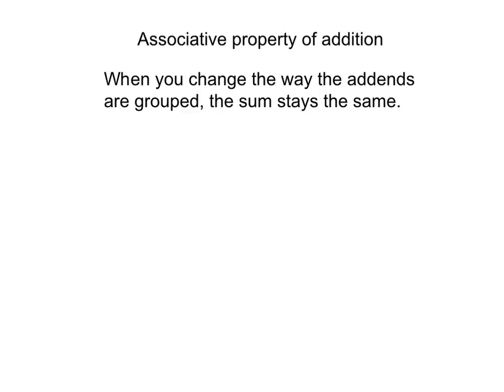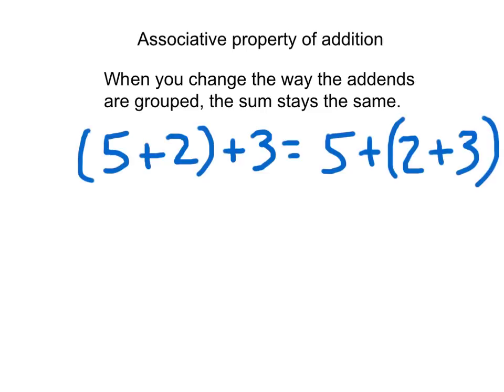Here's the definition — go ahead and copy it down. We've got the associative property of addition: when you change the way the addends are grouped, the sum stays the same. When you change the way the addends — the numbers we're adding together — are grouped, the sum, which is the answer to an addition problem, stays the same.